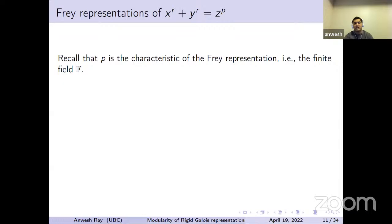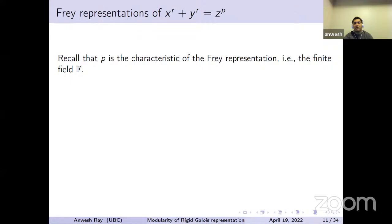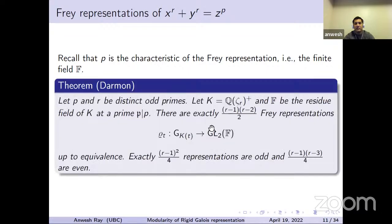Let's look at the next case considered by Darmon: x^R + y^R = z^P. The difference is that P is the characteristic of the field F. P and R are distinct primes. K is again the totally real subfield of Q(zeta_R), and F is the residue field of K at a prime above P. In this situation, there are (R−1)·(R−1)/2 Frey representations up to equivalence. Of these, (R−1)^2/4 are odd and (R−1)(R−3)/4 are even.